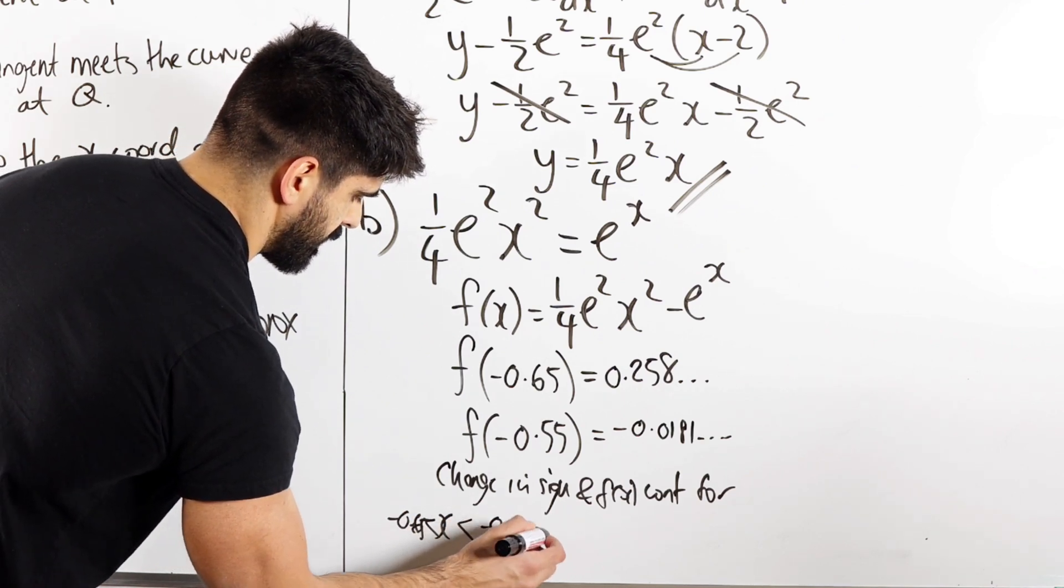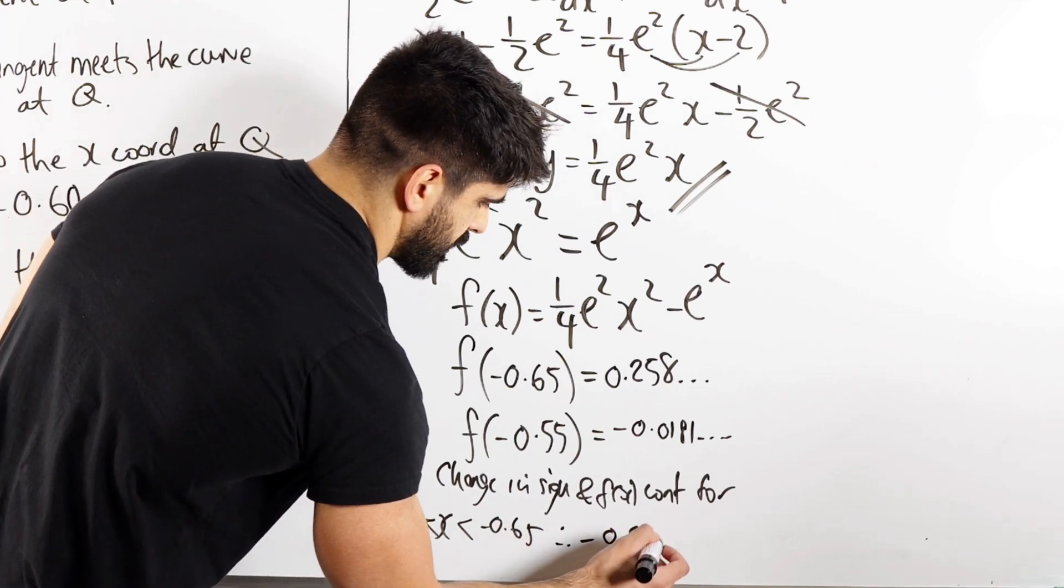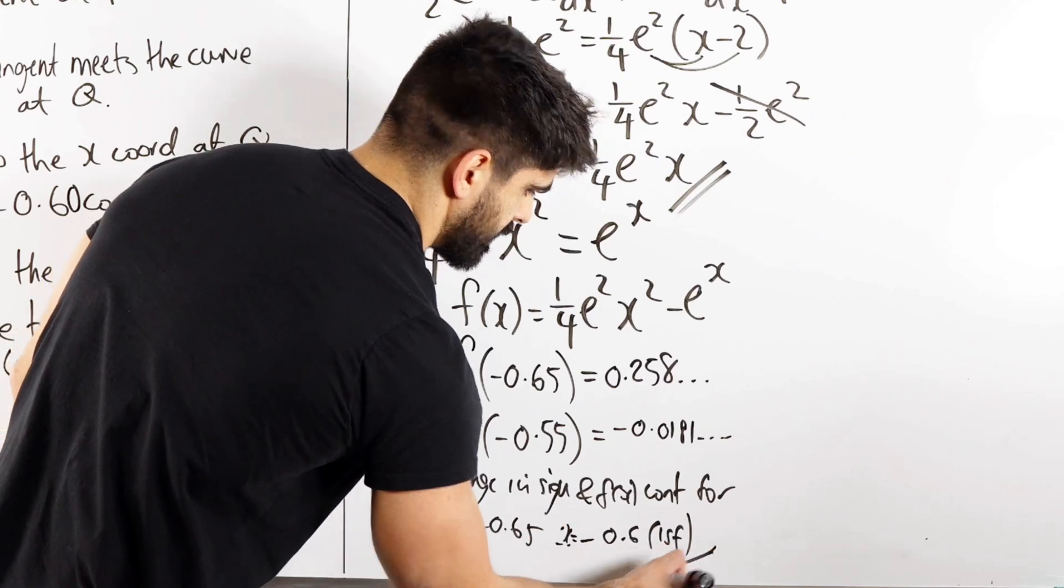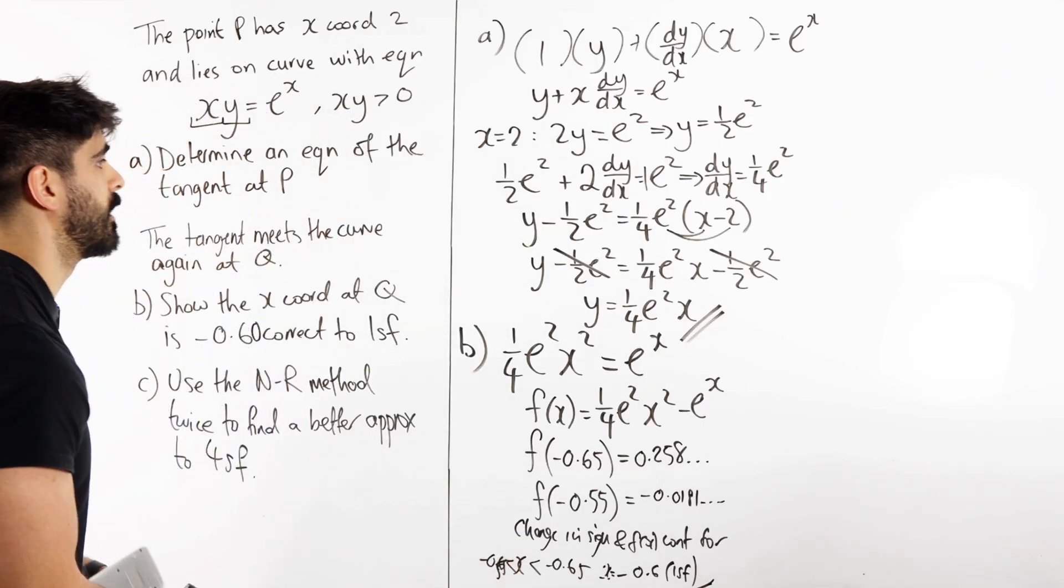And f of x is continuous for x being between minus 0.65 and minus 0.55. Therefore, x equals minus 0.6 to 1 significant figure.